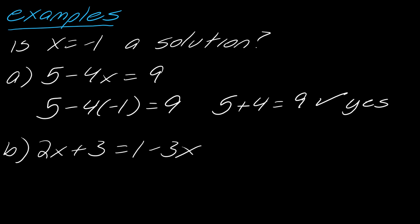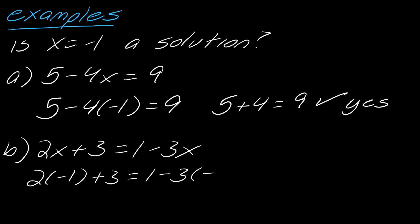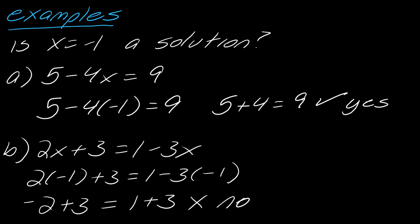For the other equation, I have multiple instances of x, so I plug in negative 1 each time. We get 2 times negative 1 plus 3 equals 1 minus negative 3 times negative 1, which is negative 2 plus 3 equals 1 plus 3. That's not equal, so it's not a solution.